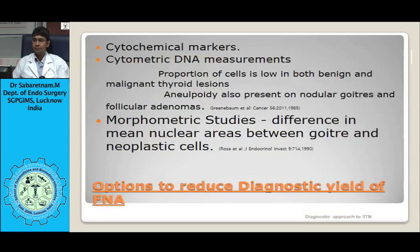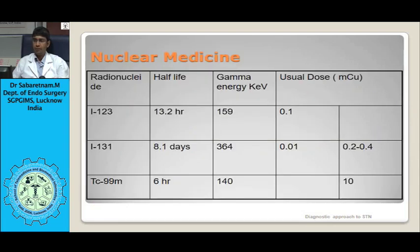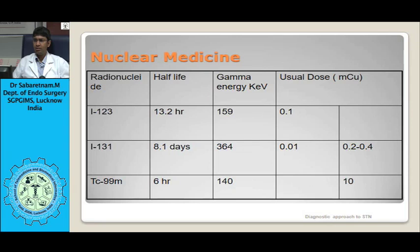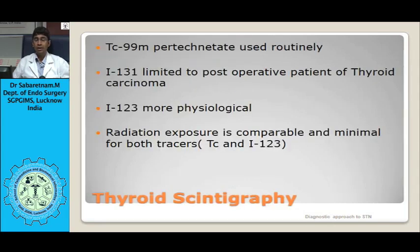This categorized system is very important for FNAC reporting. A non-diagnostic result can occur due to obscuring blood, overlying thick smears, or improper air-drying or fixation. If the first FNAC is non-diagnostic, it should be repeated with ultrasound guidance. If that is also non-diagnostic, surgical excision — minimum hemithyroidectomy — is advocated.